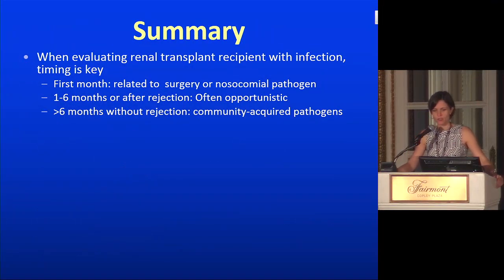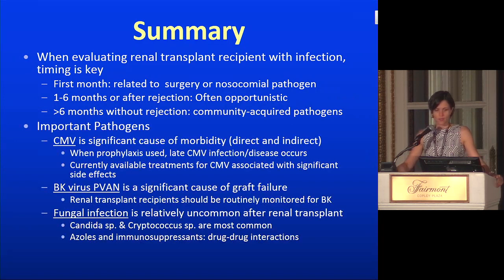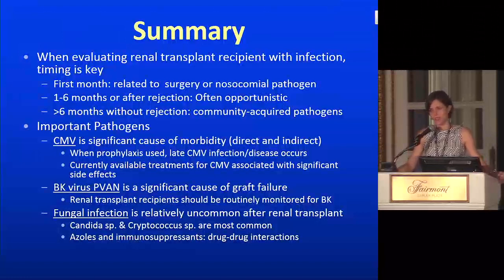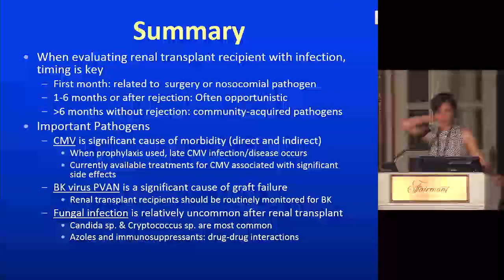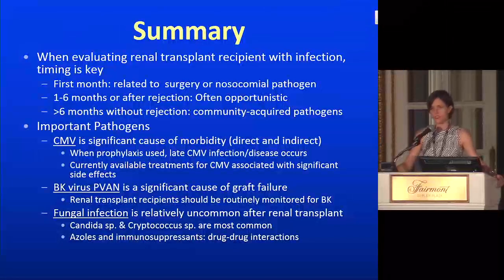In summary: when evaluating a renal transplant patient with infection, timing is key. If infection happens in the first month, it's typically related to surgery or nosocomial pathogens. One to six months after transplant, or after recent rejection treatment, it's typically opportunistic. More than six months after transplant with no rejection, it's often community-acquired. Important pathogens include CMV — the most important infection after renal transplant — where prophylaxis delays reactivation but current treatments have significant side effects. BK virus is a significant cause of graft failure; monitor patients and use immunosuppression reduction as the key management. Fungal infection is relatively uncommon; Candida and Cryptococcus are most common, and azoles have many drug-drug interactions with immunosuppressants.